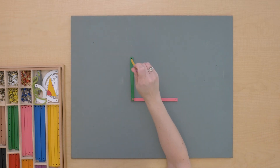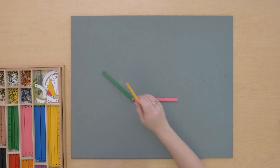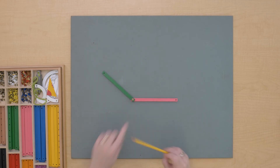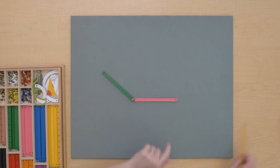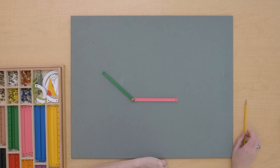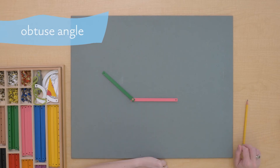And when we have this angle like here, this angle that's larger than a right angle, it's called an obtuse angle.